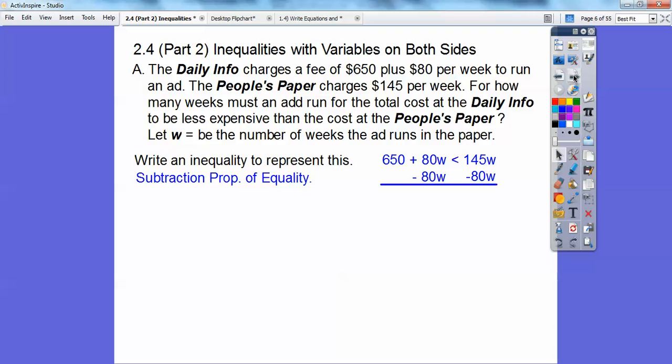We're going to use the subtraction property and subtract 80W from both sides. We get 650 less than 65W. You remember what we do now? We're going to divide both sides by 65. This is called the division property. We divide and simplify and we get 10 is less than W, or W is greater than 10.